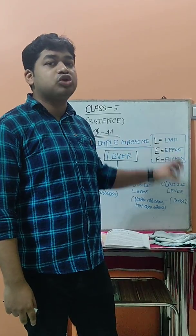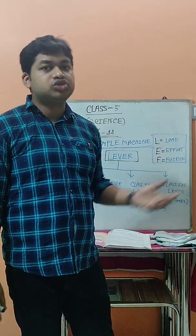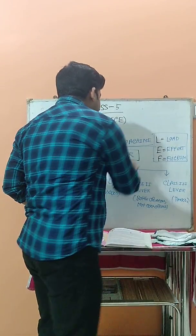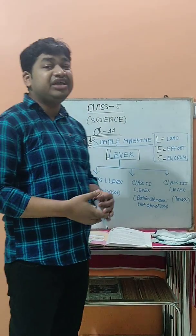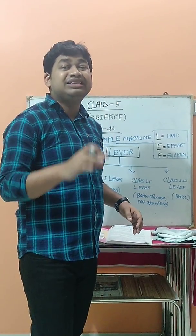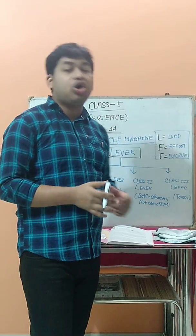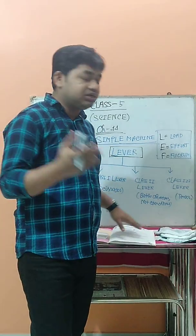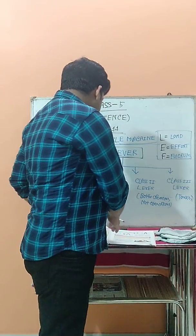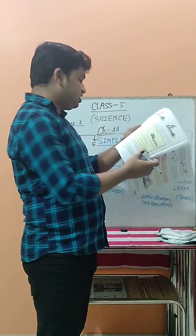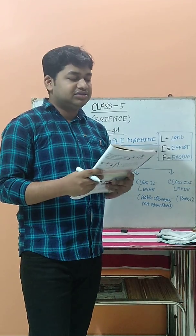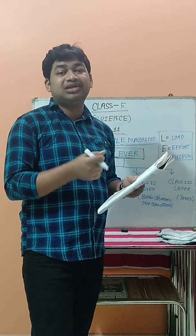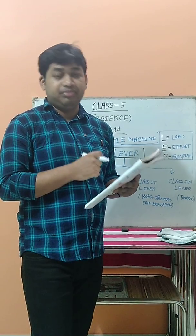Today we are going to discuss the different types of simple machines. The first one is the lever. A lever is a rigid rod or bar that is raised on its support, which is called the fulcrum. You can see a picture of the lever in your book on page 106.